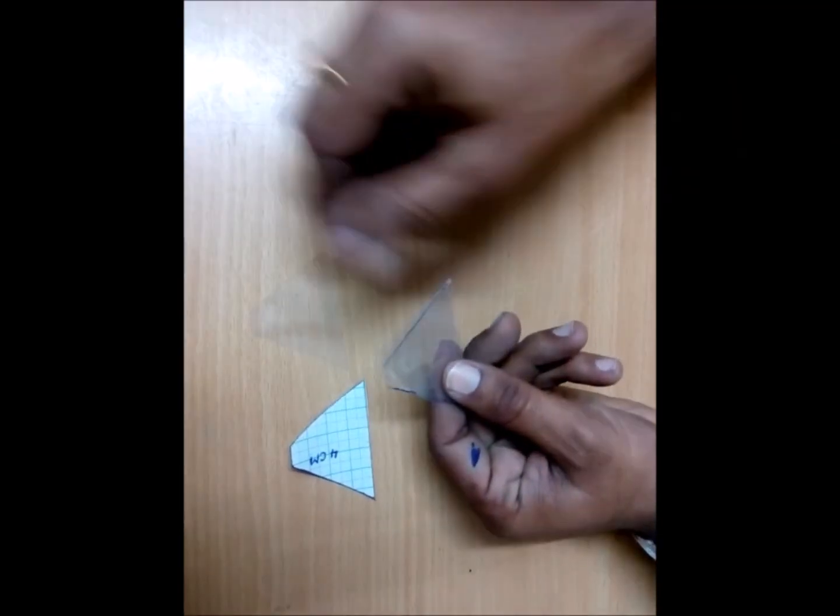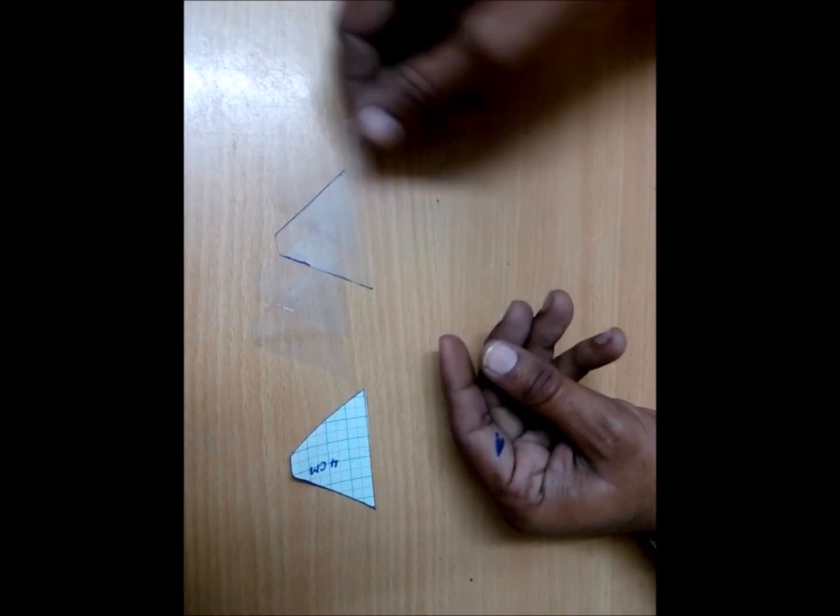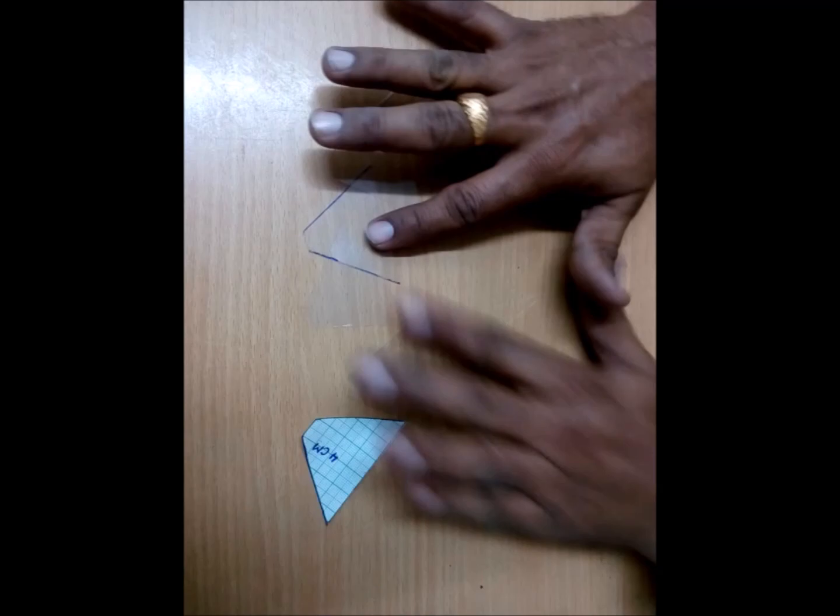Cut a total of 4 trapezoid shapes of transparent sheet with the help of cutter or scissor to make the 3D hologram.